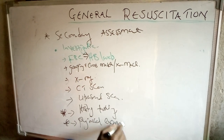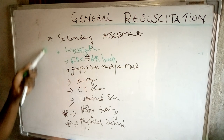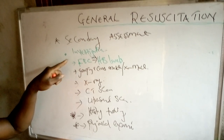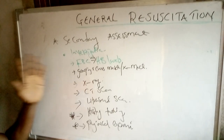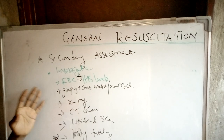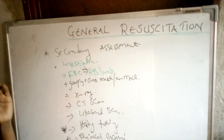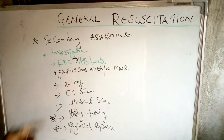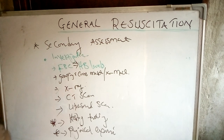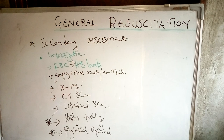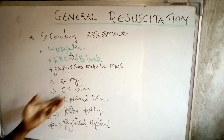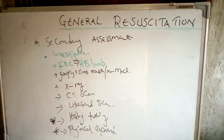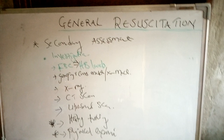So under secondary assessment for a surgical emergency, you do investigations including history taking, physical examination, collection of blood for full blood count (hemoglobin levels), grouping and cross match to avoid infusing the wrong blood group, chest X-ray if indicated, CT scan, and ultrasound scan. These are the things you consider when doing the secondary assessment. Thank you so much - if you haven't subscribed yet, please subscribe to receive notifications.